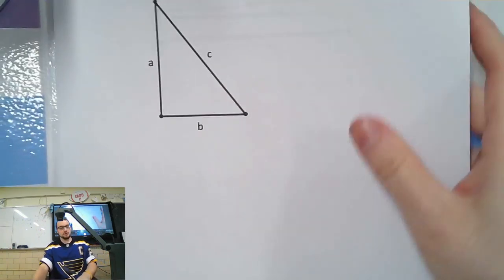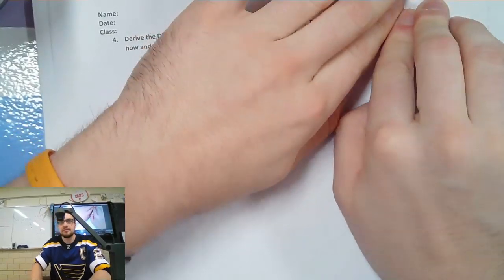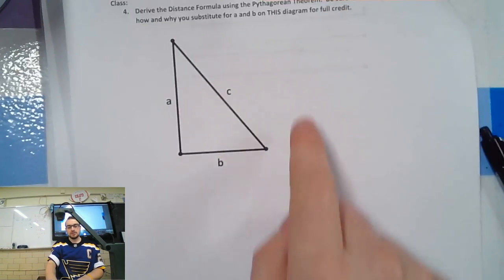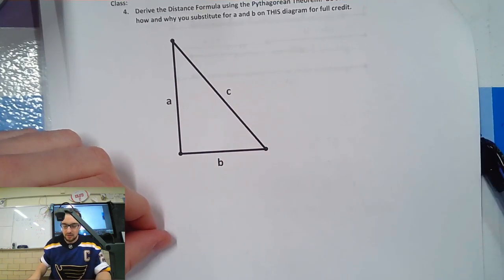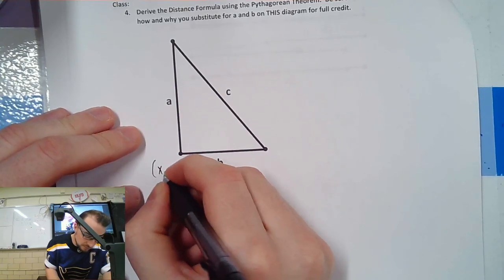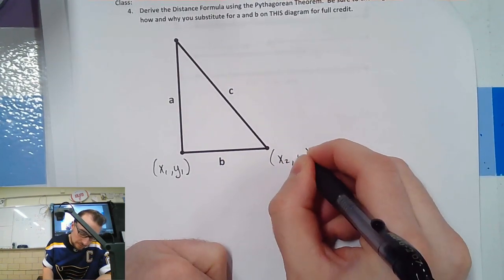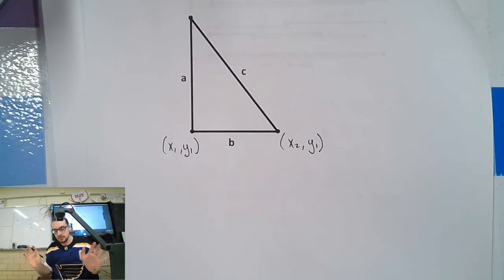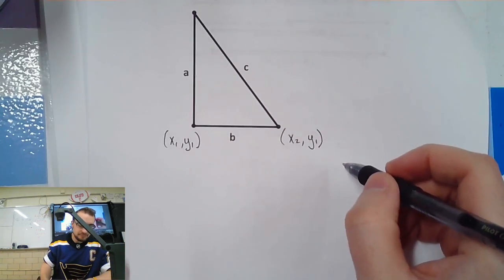Here we go — page four, question four. 'Derive the distance formula using the Pythagorean theorem.' Derive means to pull out of, so we're going to take the Pythagorean theorem and pull the distance formula out of it. Be sure to thoroughly explain how and why you substitute for a and b in this diagram for full credit.